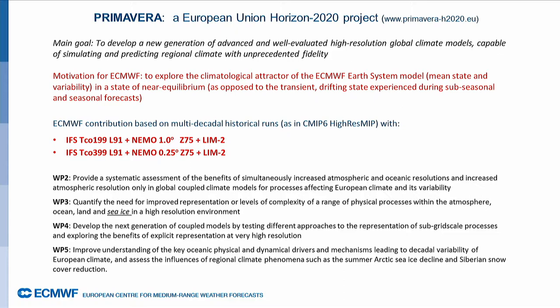Now let me move to the second part. This is basically how we can trigger NAO variability in our subseasonal forecast. When you do subseasonal forecast, of course we start with observed initial conditions, so the model starts from the observed attractor, but models have biases and they asymptote to their own climate. So we decided to take part in this EU-funded project Primavera, whose goal is to diagnose the behavior of high-resolution coupled models and to develop improvements in different aspects of these models.